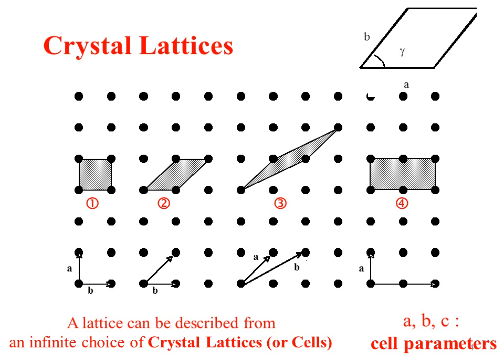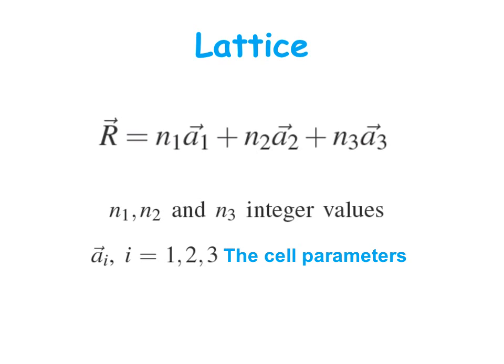Below each lattice you see the vectors that can be used to describe it. These are the cell parameters in two dimensions, called a and b, and there are only two. The translation symmetry that allows us to generate the lattice is given by the vector r, with a1, a2, and a3 being cell parameters and n1, n2, and n3 being integral numbers. This allows us to generate all the lattice points.